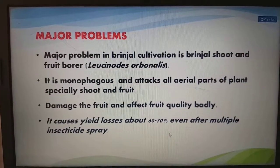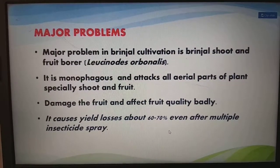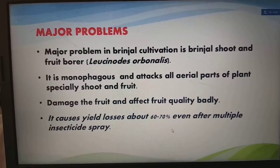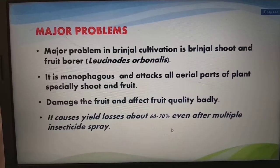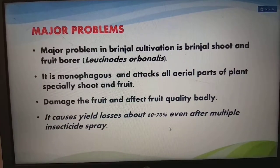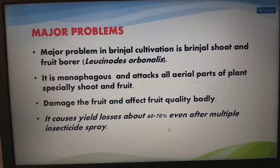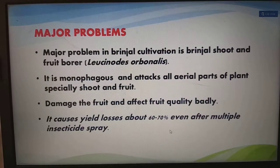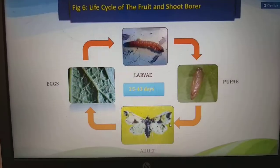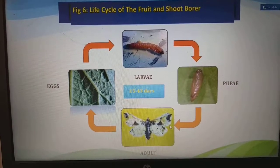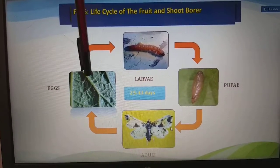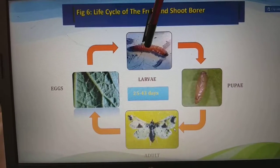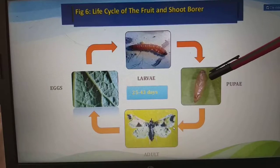The major problem in brinjal cultivation is the brinjal shoot and fruit borer. It is monophagous and attacks all aerial parts of the plant, specifically the shoot and fruit, damaging the fruit and affecting fruit quality badly. It causes yield losses of about 60 to 70 percent even after multiple insecticide sprays. The life cycle goes from eggs to larva, larva to pupa, and finally to adult, taking around 25 to 43 days for the whole life cycle development.